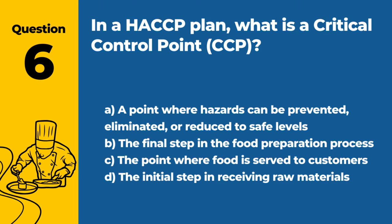Question 6: In a HACCP plan, what is a critical control point (CCP)? A. A point where hazards can be prevented, eliminated, or reduced to safe levels. B. The final step in the food preparation process. C. The point where food is served to customers. D. The initial step in receiving raw materials. Answer: A. A point where hazards can be prevented, eliminated, or reduced to safe levels. A critical control point (CCP) in a HACCP plan is a stage where control can be applied to prevent, eliminate, or reduce food safety hazards to safe levels.